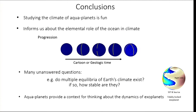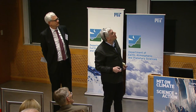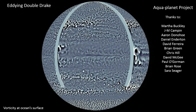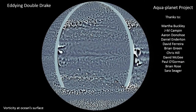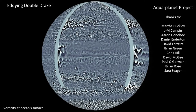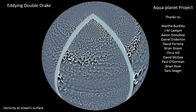There are many unanswered questions: do multiple equilibria of Earth's climate exist? They do in this model. If so, how stable are they? We can also use these calculations as a framework for thinking about the dynamics of exoplanets — we've been working with Sarah on these matters. I'm going to finish by thanking the many people who over the years have been working on these kinds of problems. This is a very high-resolution simulation of an aquaplanet — what the ocean would look like if North America were shrunk...